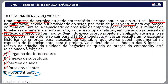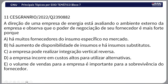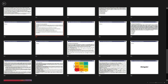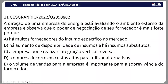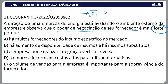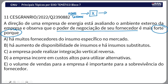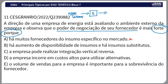Questão 11: a direção de uma empresa de energia observa que o poder de negociação do seu fornecedor é mais forte. Se há muitos fornecedores, o poder de barganha é fraco — posso trocar por outro. Se há insumos substitutos, o poder de barganha também é fraco. Se a empresa pode realizar integração vertical reversa comprando o fornecedor, teria cliente forte e fornecedor fraco.